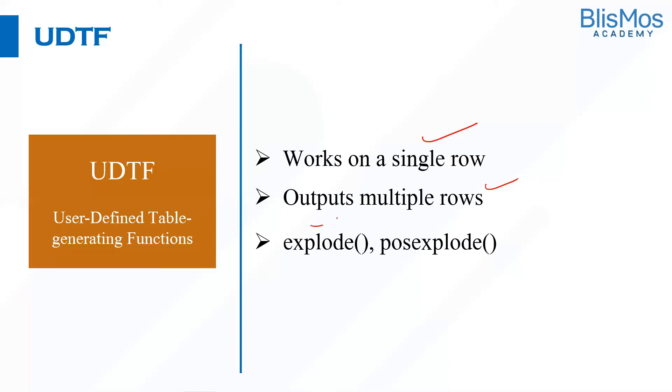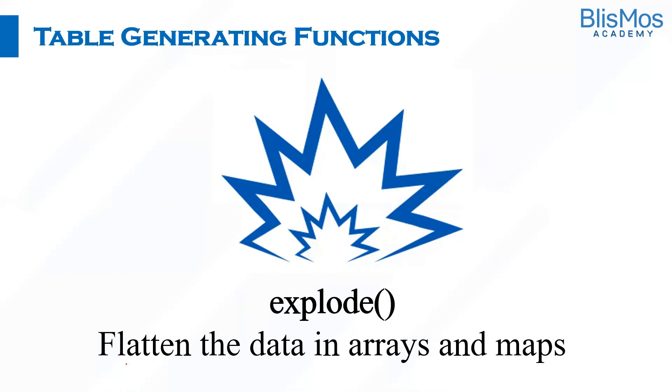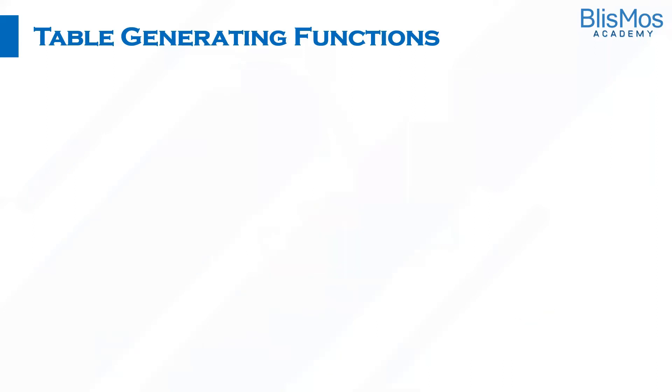We have functions like explode and posexplode, which take the single row as input and give multiple rows as output. We have the explode function, which is very often used as part of Hive. Explode functions will flatten the data in arrays and also maps. What does it mean? We'll take an example and see that.